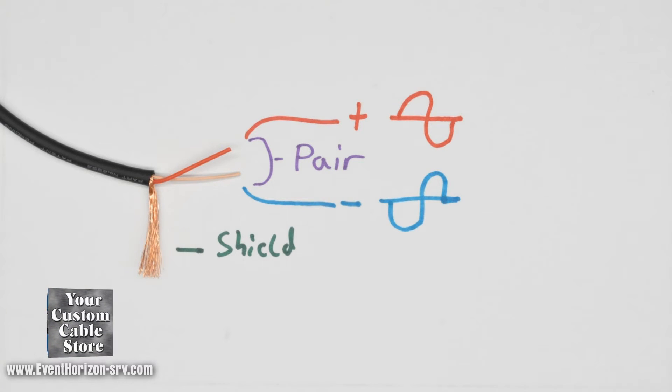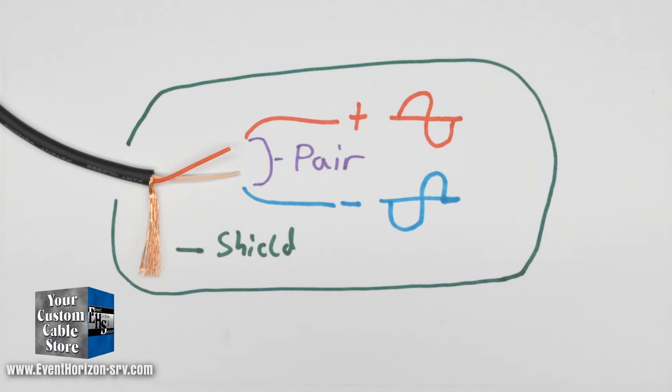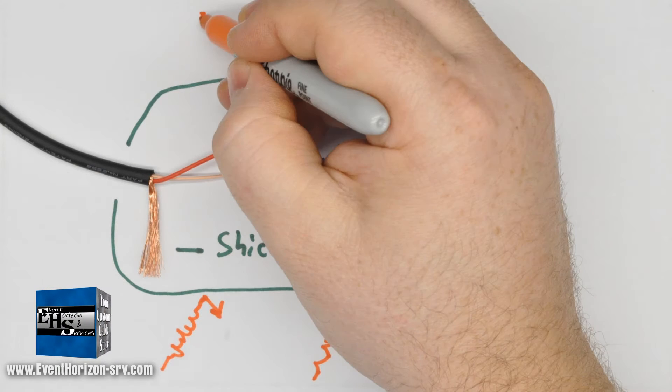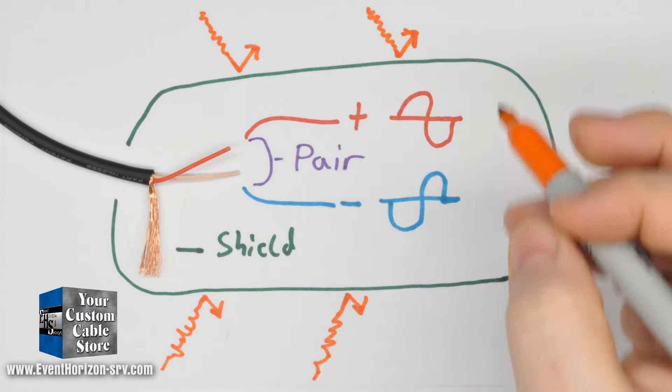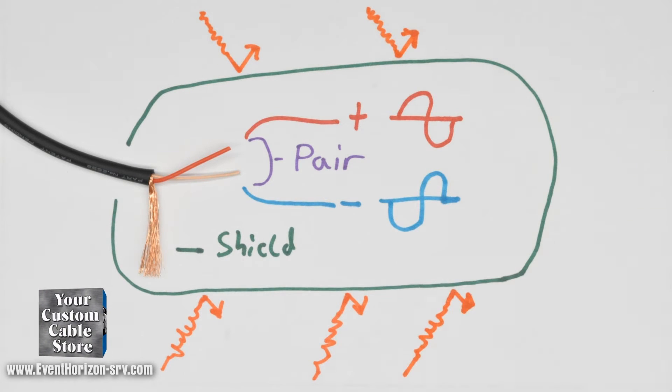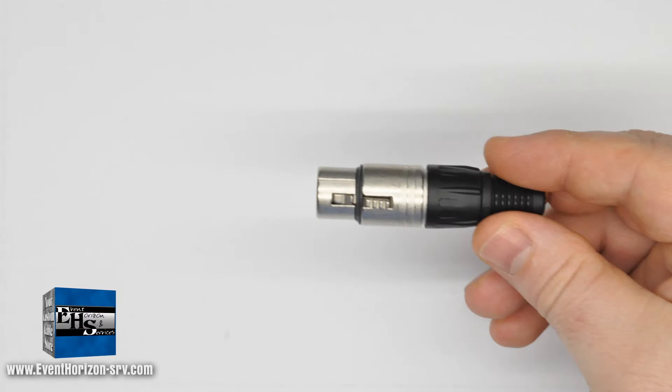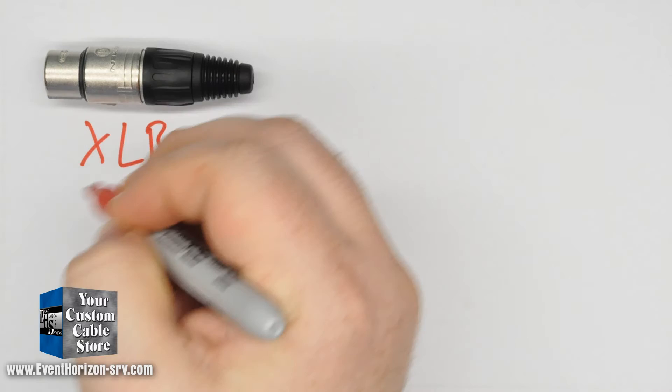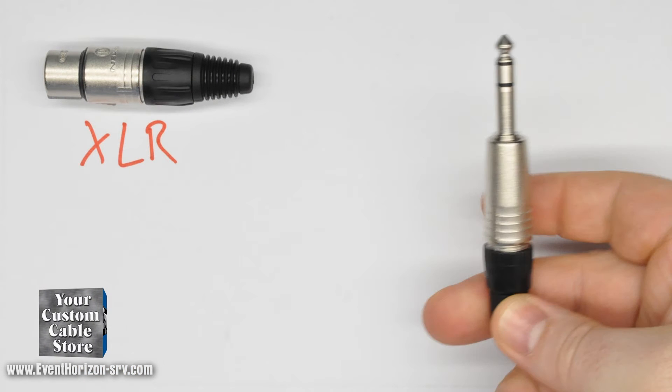It can carry a balanced signal, which is best for rejecting noise. The signal is carried on the pair of wires and the shield is used to help insulate the pair from noise. You will commonly find microphone type cable terminated with XLR connectors and TRS connectors.